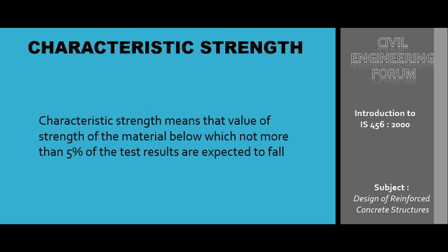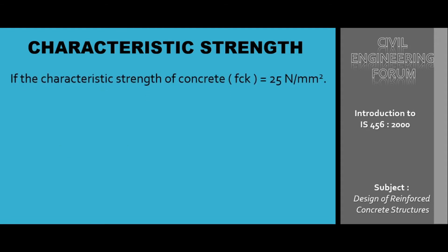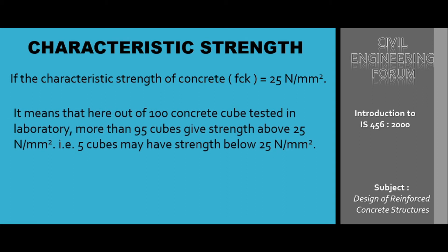Let us take an example. If the characteristic strength of concrete, abbreviated as fck, is taken as 25 N/mm², it means that out of 100 concrete cubes tested in the laboratory, more than 95 percent give strength above 25 N/mm². That is, 5 percent of cubes may have strength below 25 N/mm². Since 95 percent of test results are above this expected value, we call 25 N/mm² our characteristic strength.